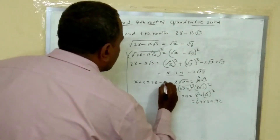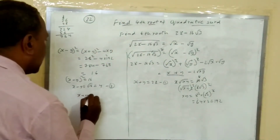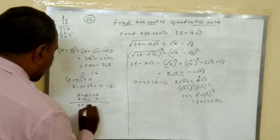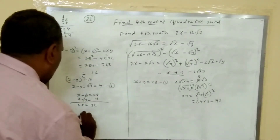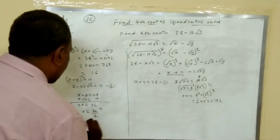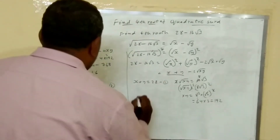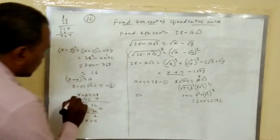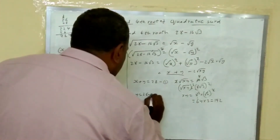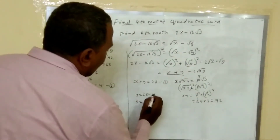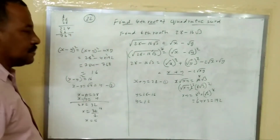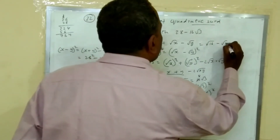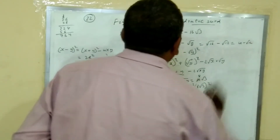Take x minus y equals 4 as the second equation. Adding x plus y equals 28 and x minus y equals 4 gives 2x equals 32, so x equals 16. Substituting back: 16 plus y equals 28, so y equals 12. Therefore, the square root of 28 minus 16 root 3 is equal to root 16 minus root 12, which is 4 minus root 12.